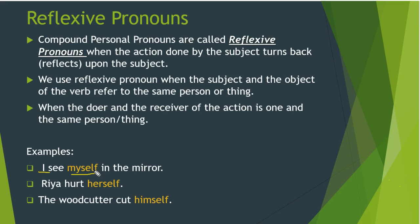Instead of saying 'I see me', we say 'I see myself in the mirror'. When the subject and object of the verb refer to one and the same person, animal, or thing, we use reflexive pronouns. Next sentence: 'Ria hurt herself' — the action is 'hurt', Ria did it, and Ria received it, so 'herself' is a reflexive pronoun.